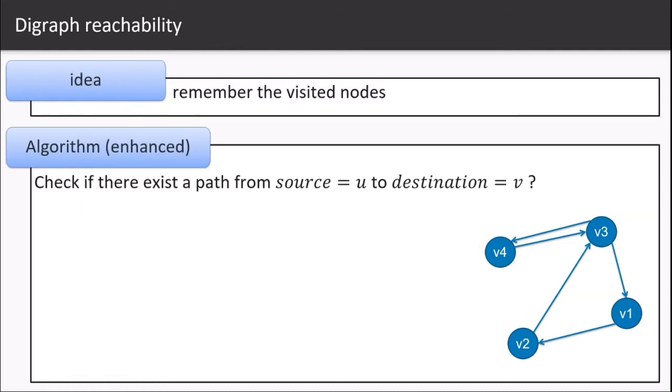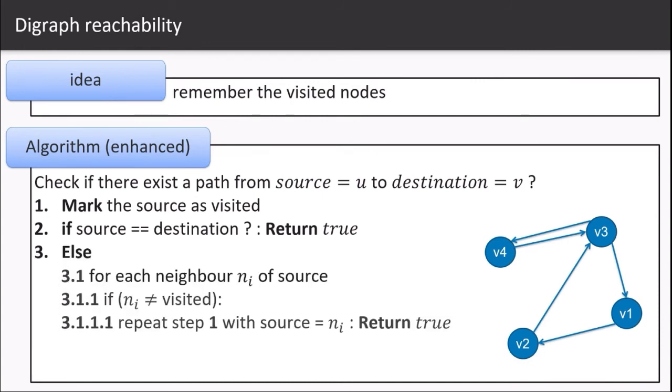So to overcome this issue, we simply modify the existing code to remember each visited node. Check if there exists a path from source to destination node. Mark the source node as visited. If the source is equal to destination, return true. Else, for each neighbor of the source, if we have not visited this neighbor already, then repeat step 1 with source equal to the neighbor node.